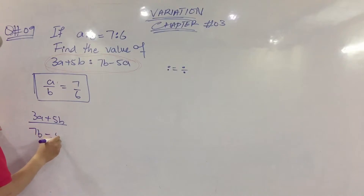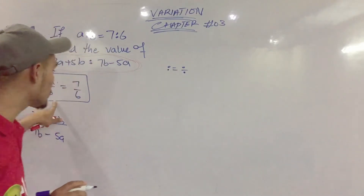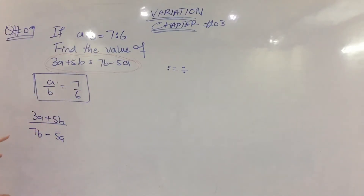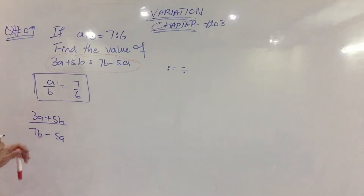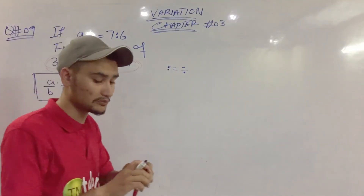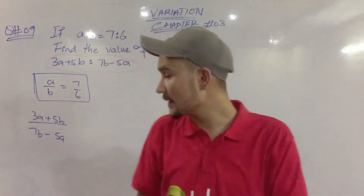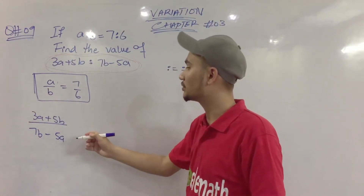We find the value. Since a divided by b equals 7 divided by 6, we will use a divided by b in our working.